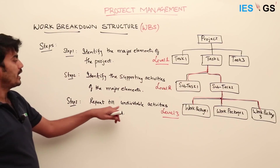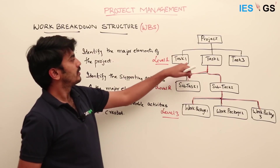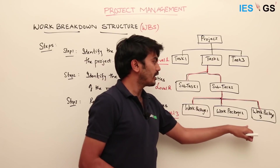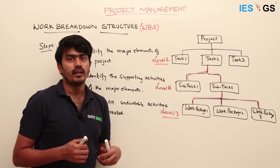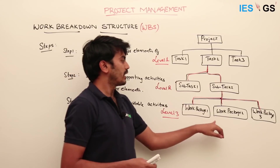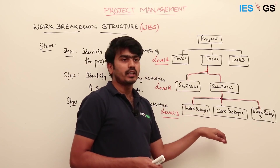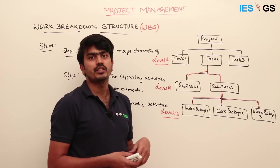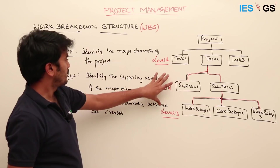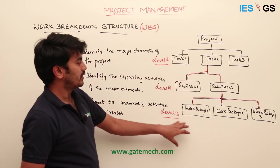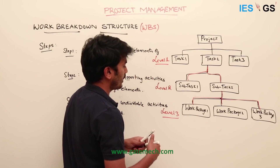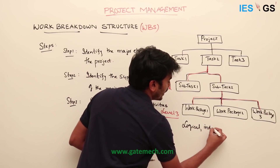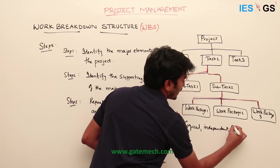We keep repeating this — breaking down tasks at each level — until we reach a level where each activity can be assigned to an independent person, is manageable, and is logical. This process is repeated until we get activities which are logical, independent, and manageable.